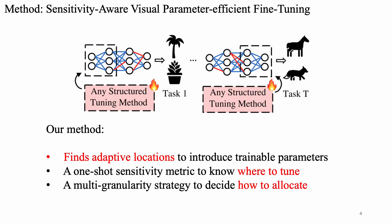Compared to the literature, our method finds adaptive locations to introduce trainable parameters for different tasks. Our main contributions are: firstly, we propose a one-shot sensitivity metric to know where to tune. We also devise a multi-granularity strategy to decide how to allocate the trainable parameters.